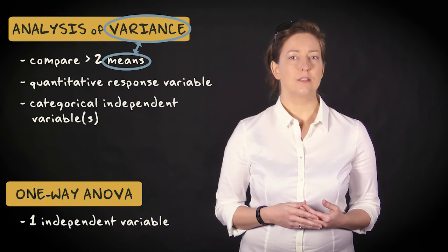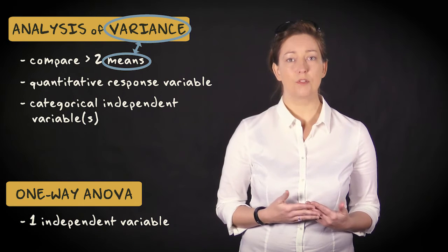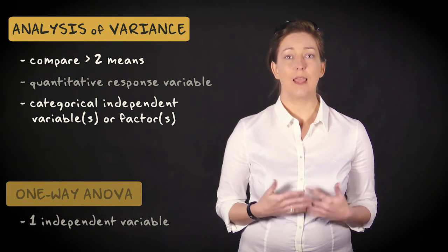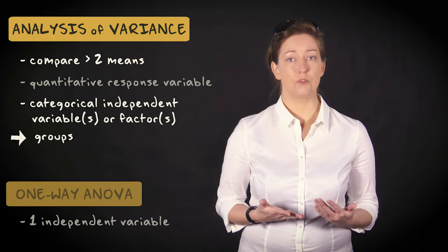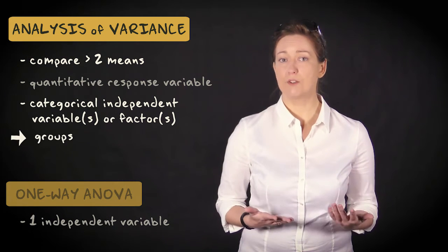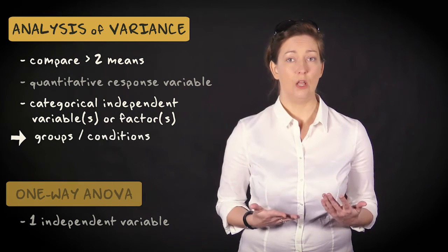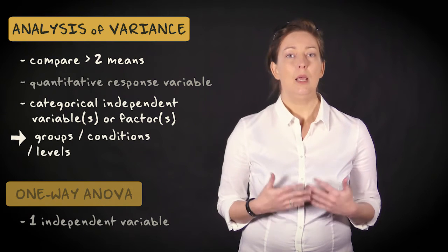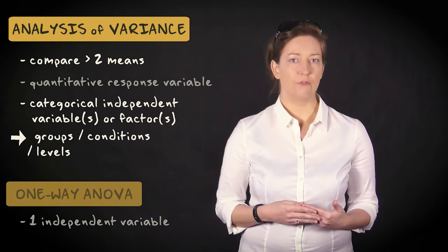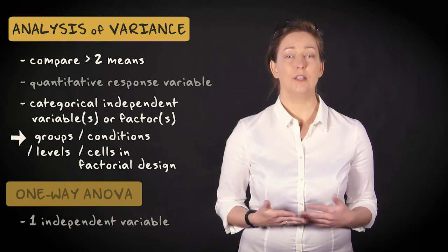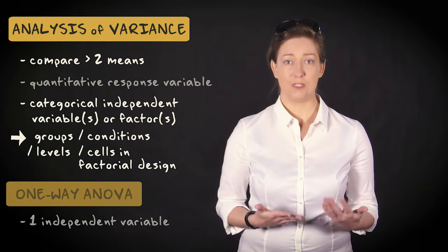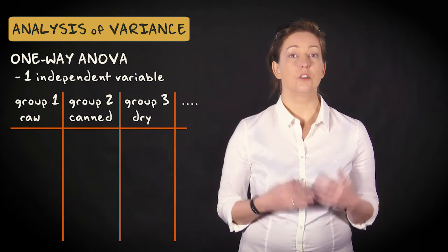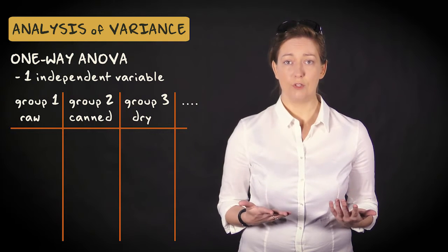In analysis of variance, independent variables are often referred to as factors. The factors are categorical variables that represent groups, often experimental or quasi-experimental conditions, also referred to as the levels of a factor. People can also refer to groups or levels as the cells in a factorial design. In one-way analysis of variance, there's just one factor with three or more levels.